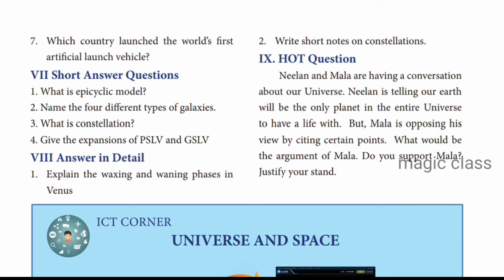For detail, you can look in your book. Next question: Name the four different types of galaxies. The answer is spiral, elliptical, irregular, and barred spiral galaxy. Question number 3: What is a constellation? A constellation is a recognizable pattern of stars in the night sky when viewed from the earth. There are 80-plus different types of constellations visible in our galaxy.